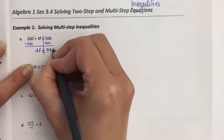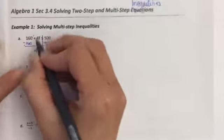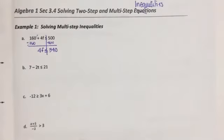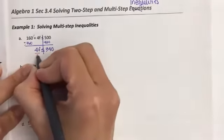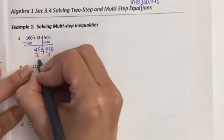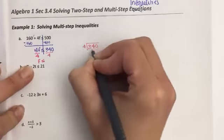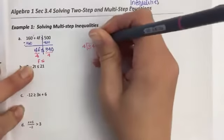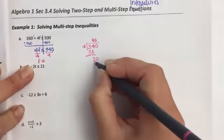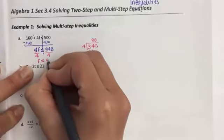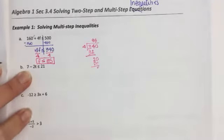Make sure you bring down your inequality symbol and then 500 minus 160 is going to give me that 340. Then my next step is to divide by 4. F is less than or equal to 85. And that's your answer. You guys do not need to graph these on our notes today.